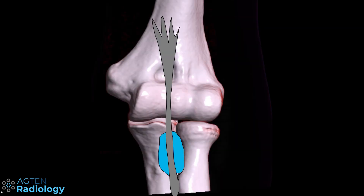Before we go through the cases, we have to understand the anatomy of the bursa. Here you can see an illustration where we have the distal biceps tendon inserting into the radial tuberosity. The bicipitoradial bursa is at the very distal portion before it inserts onto the radial tuberosity, and it goes kind of around the tendon when the radial tuberosity is facing anteriorly.